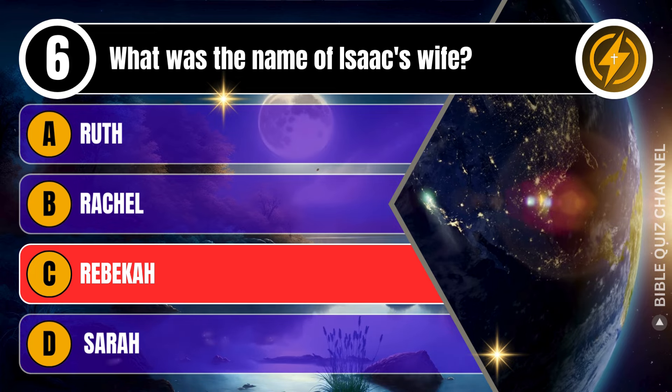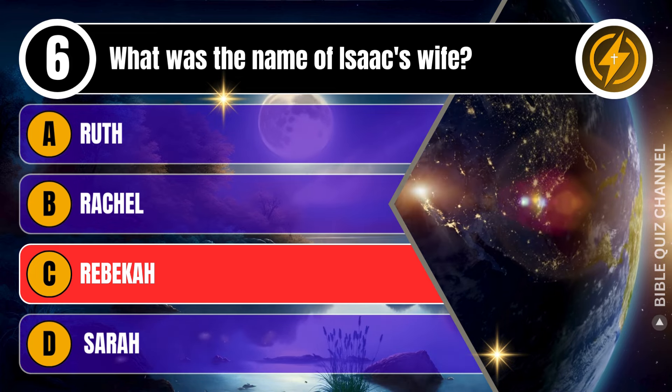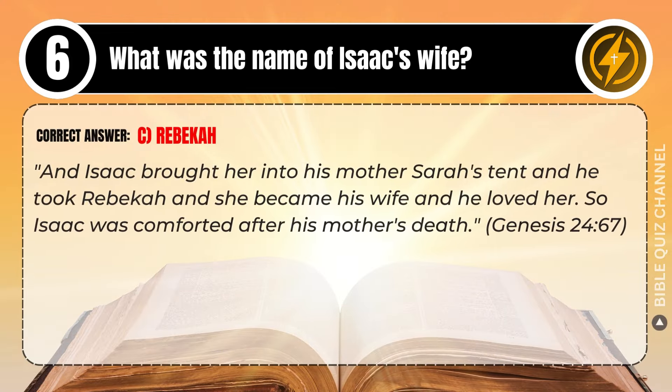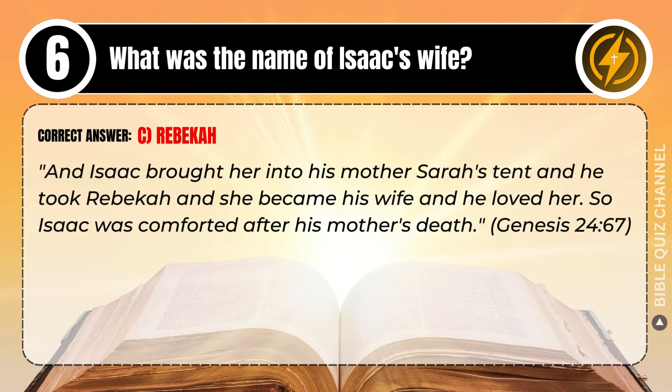Correct answer: C. Rebecca. Explaining the Bible — And Isaac brought her into his mother Sarah's tent, and he took Rebecca, and she became his wife, and he loved her. So Isaac was comforted after his mother's death. Genesis, chapter 24, verse 67.